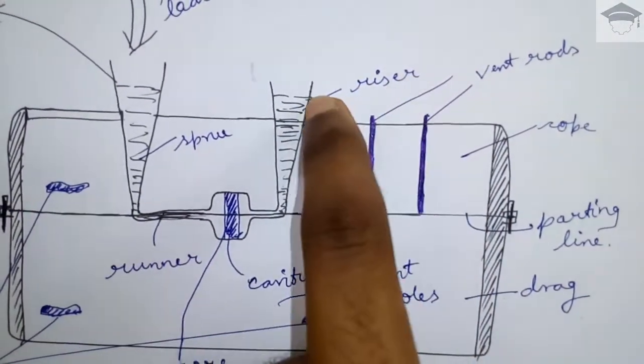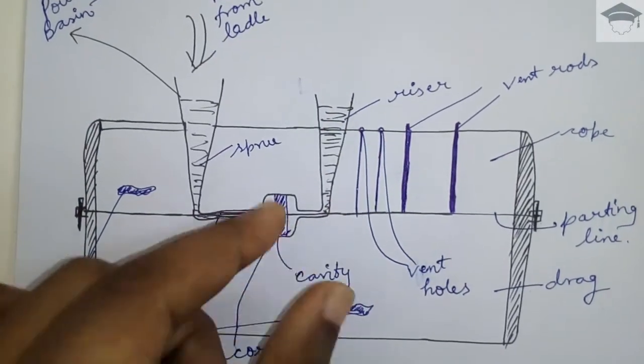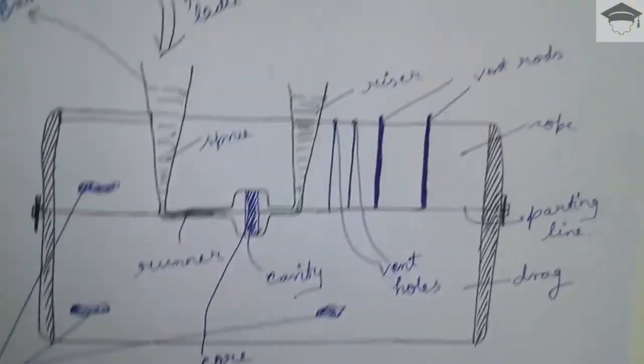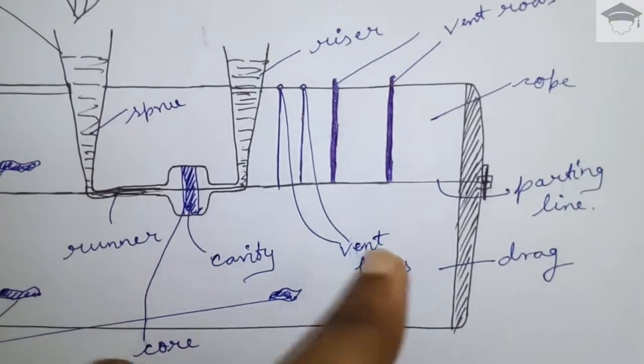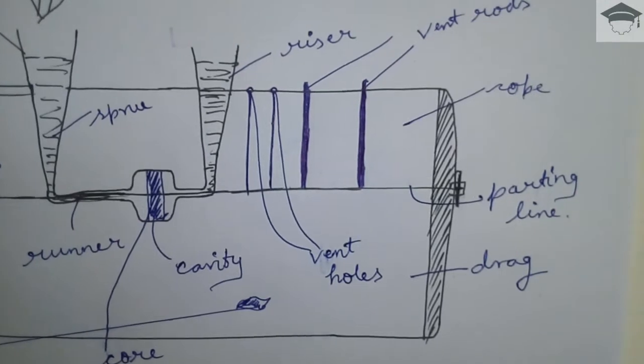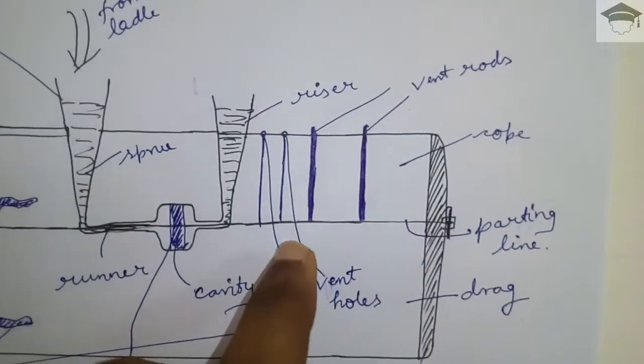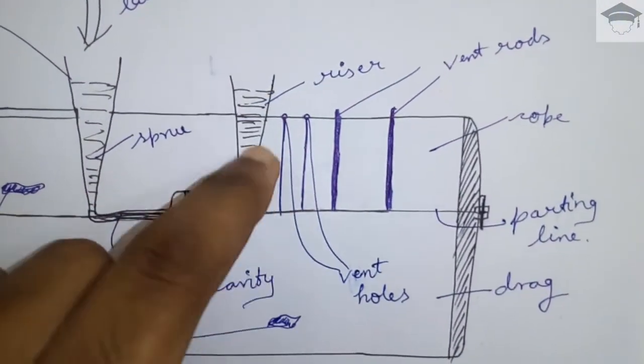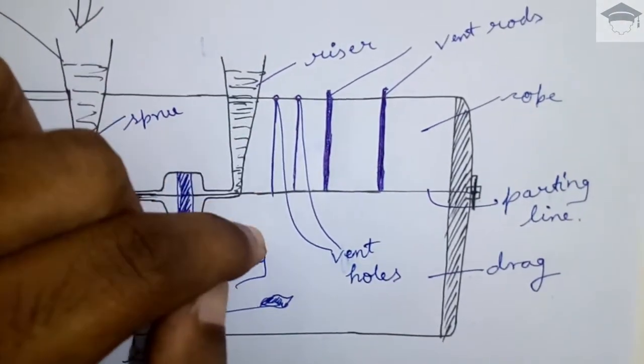So it compensates for that also - it provides extra material, extra molten material back when the solidification starts. And these are the vent rods. Now these are metallic rods that are placed deep in the cavity. Then they are pulled out. So when they are pulled out a hollow section, a hollow pipe-like will be created. So this will create the vent holes from inside to the outside.